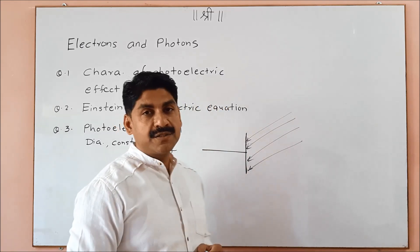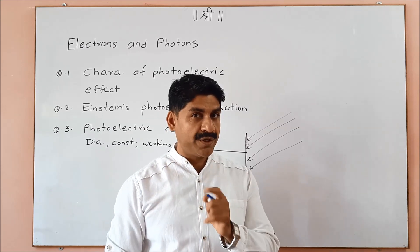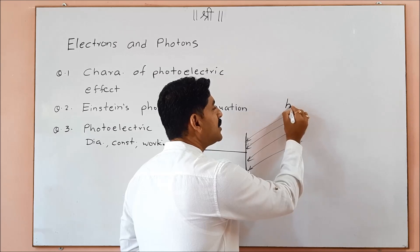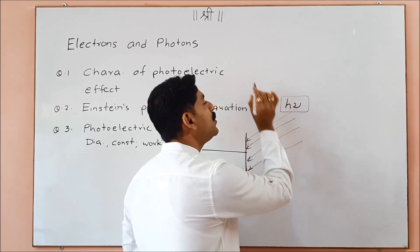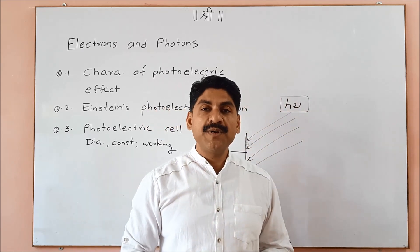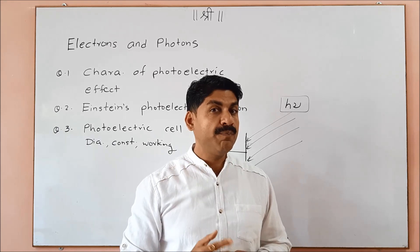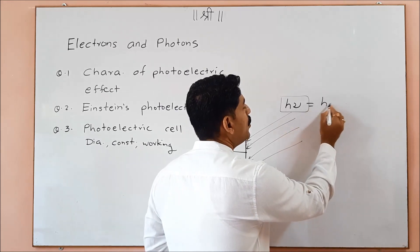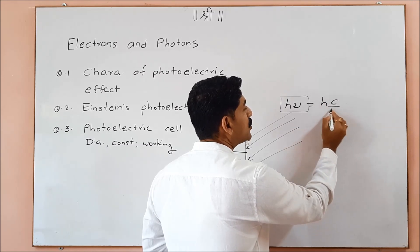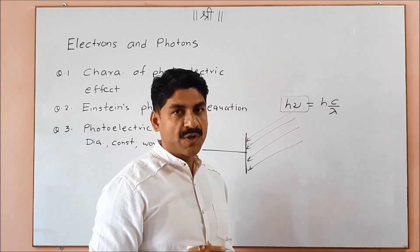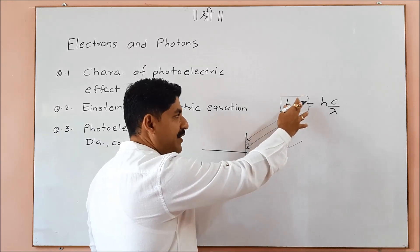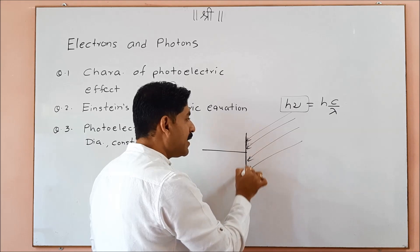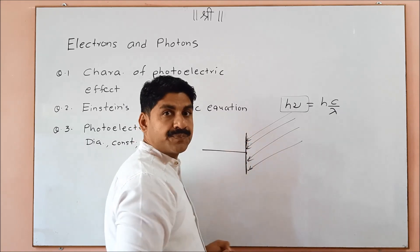Light has a dual nature — particle nature and wave nature. The particle nature is the photon, and the photon energy is hμ, where h is Planck's constant and μ is frequency. Frequency is velocity upon wavelength. When photons are incident on metal, there are electrons in the matter.